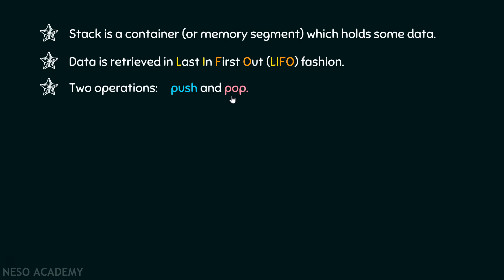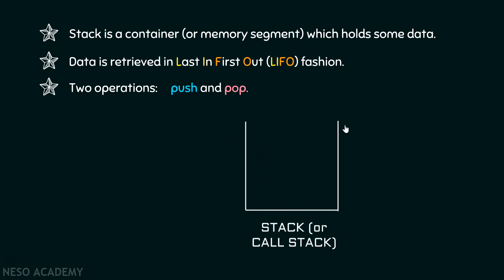Now that we understand what a stack is, let's understand why we use it with the help of an example. We will imagine a stack as a container which can hold some data. Now imagine we have a main function with some lines of code. I am calling this a call stack because this stack is capable of storing functions — whenever we call a function, it will get stored inside the stack.